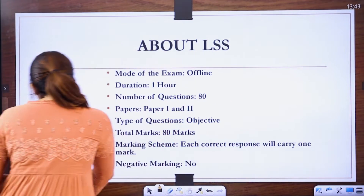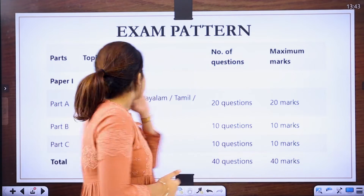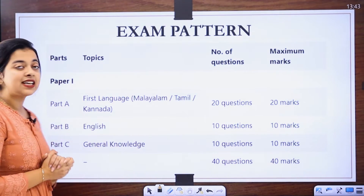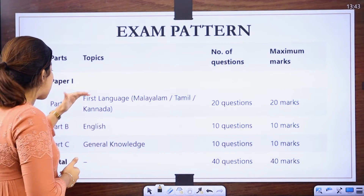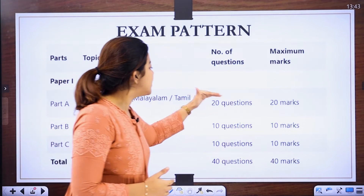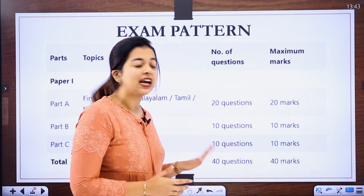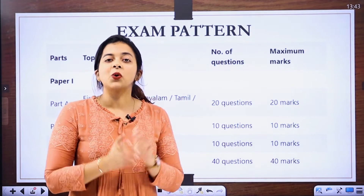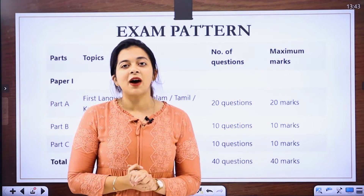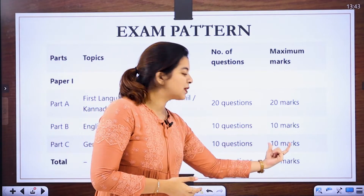In Paper 1, there is Part A, Part B, and Part C — covering First Language, English, and General Knowledge respectively. Part A has 20 questions, Part B has 10 questions, and Part C has 10 questions, making a total of 40 questions worth 40 marks.